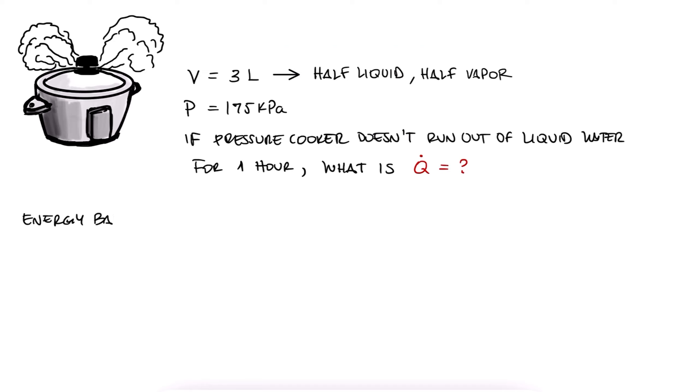From our energy balance, we have that the change in energy comes from the heat coming into the pot and the enthalpy leaving the pot as steam. The final energy is the internal energy U2 and the initial energy is the initial internal energy at U1. We'll neglect kinetic energy and potential energy terms. And from the mass balance, the mass coming out, Me, will be M1 minus M2.